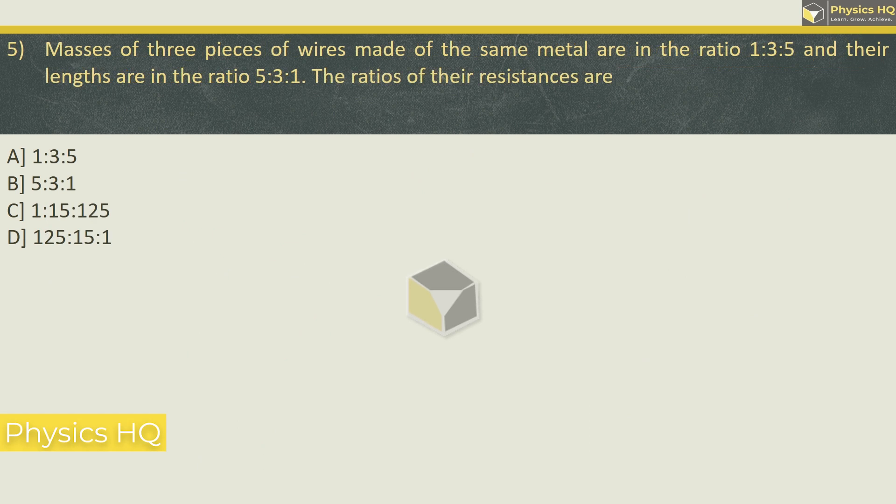Let us check out the next MCQ. Masses of 3 pieces of wires made of same metal are in the ratio 1:3:5, and their lengths are in the ratio 5:3:1. The ratio of their resistances are? Again, we will be using the same formula. Resistance is resistivity into length upon area.